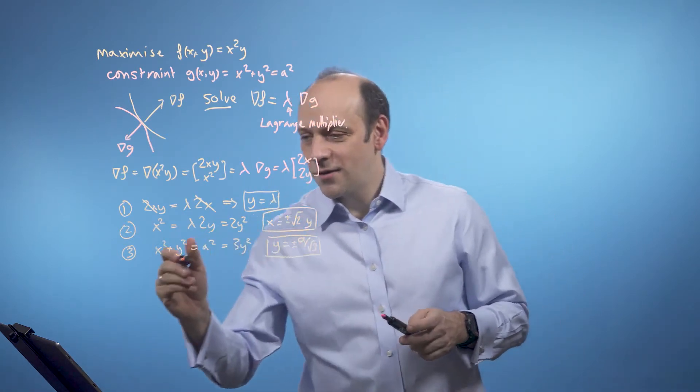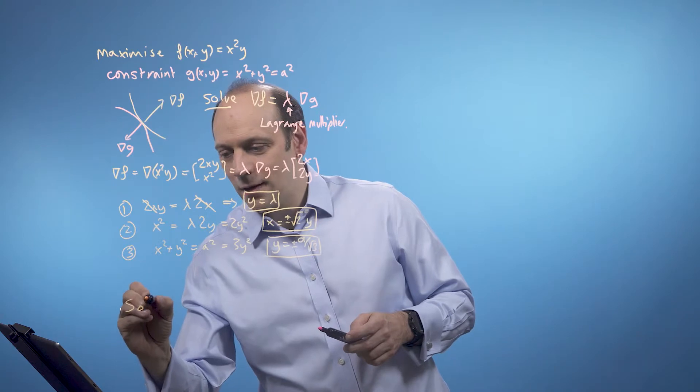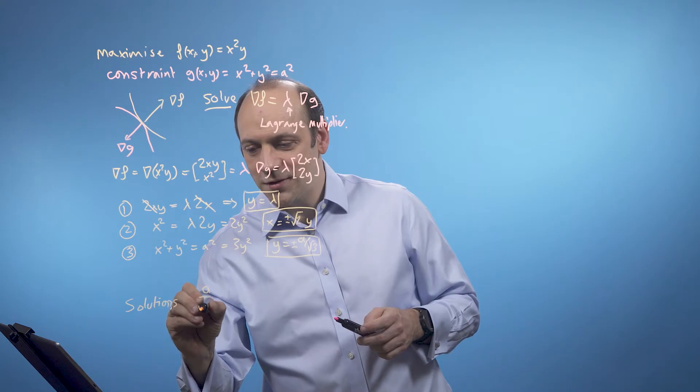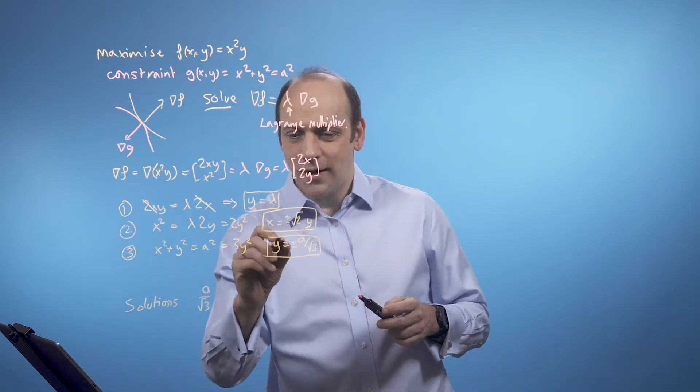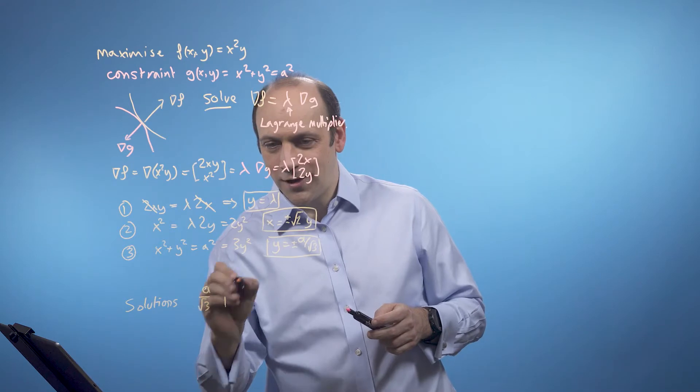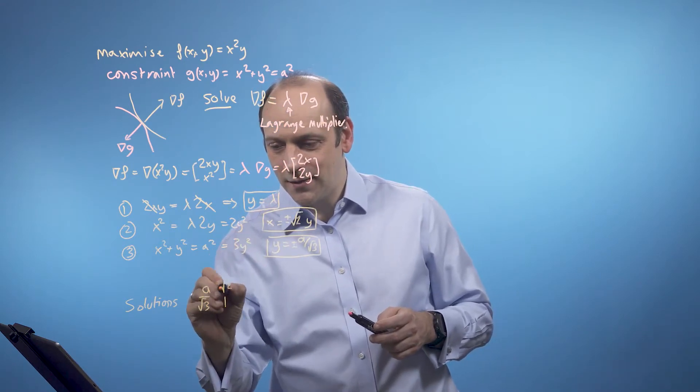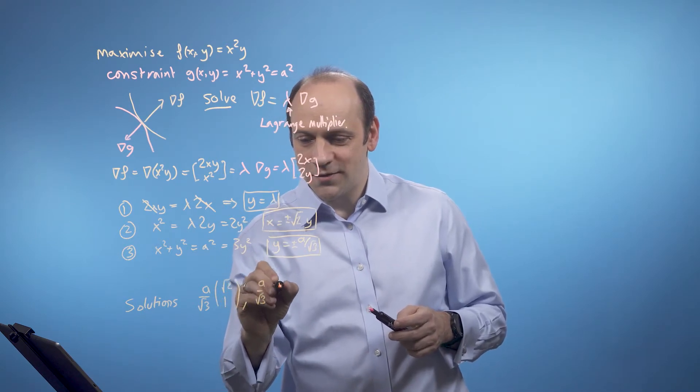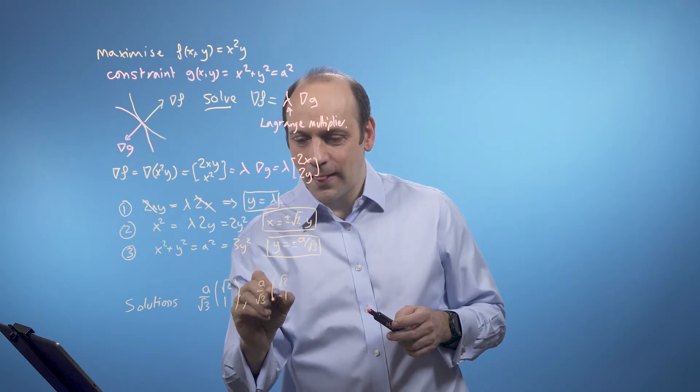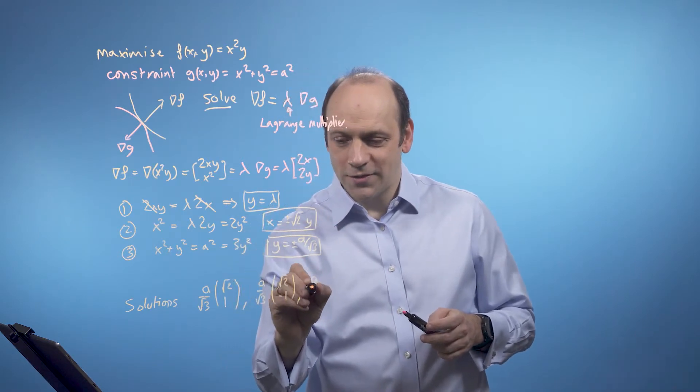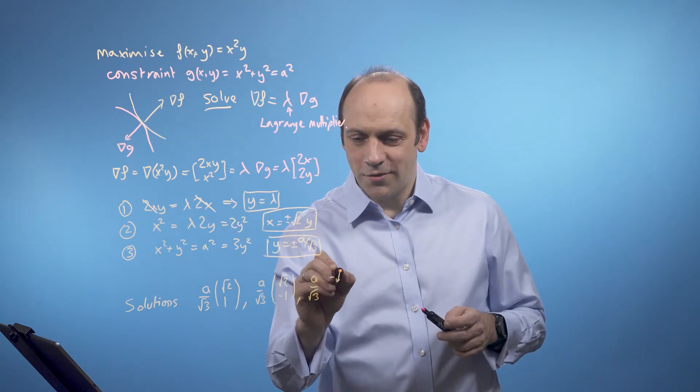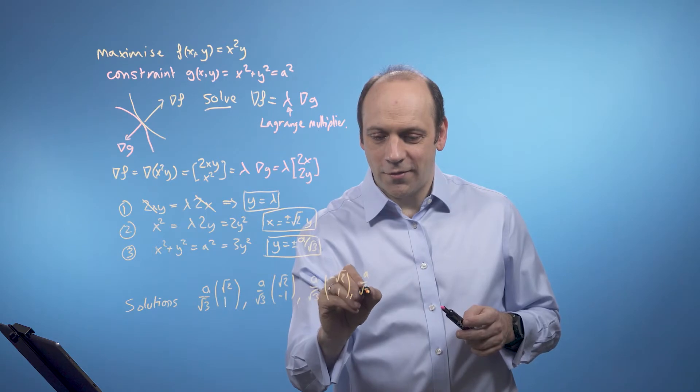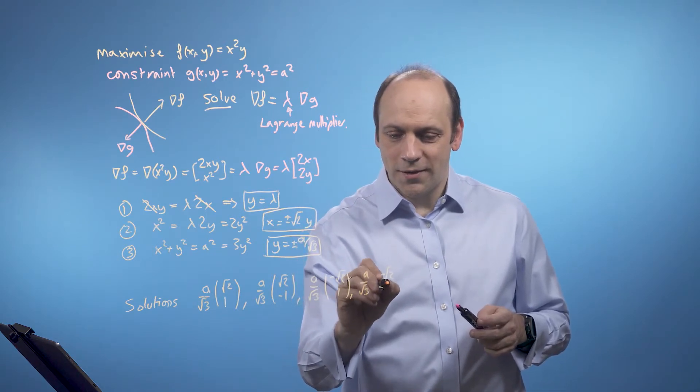So those are my solutions. So I can write those out and I've got the solutions are going to be a over the square root of 3 times, if I take y is 1, then x is root 2 times that, so root 2, 1. And I've got a over root 3 times root 2 minus 1 for y. And I've got all the possibilities: a over root 3 minus root 2 and 1, and a over the square root of minus root 2 and minus 1.